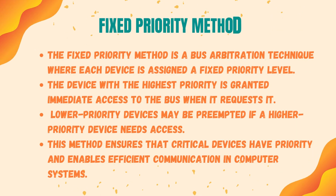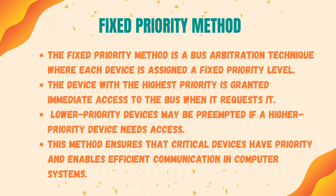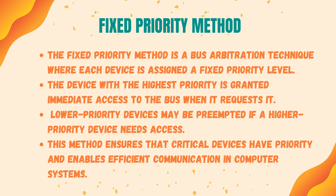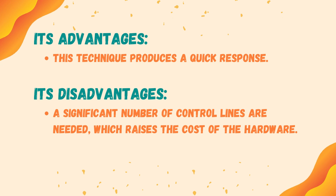The fixed priority method is a bus arbitration technique where each device is assigned a fixed priority level. The device with the highest priority is granted immediate access to the bus when it requests it, and lower priority devices may be preempted if a higher priority device needs access. This ensures that critical devices have priority and enables efficient communication. The advantage is a quick response; however, a significant number of control lines are needed, which raises hardware cost.